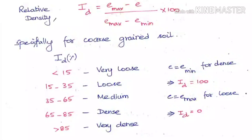The next property is relative density, which is purely based on void ratio. It is denoted by ID, equal to (E_max minus E) divided by (E_max minus E_min). E_max and E_min are fixed values for a given soil, and E is the natural void ratio at the time of measurement. This gives you an idea about the type of soil and how the void ratio relates to the volume of solids.